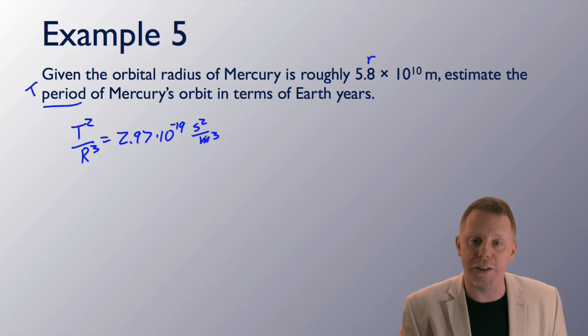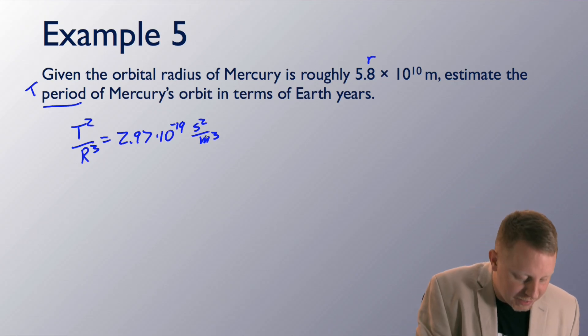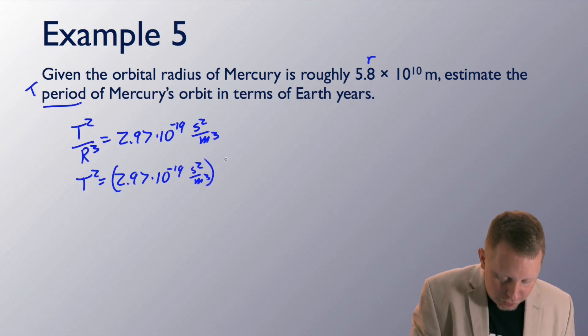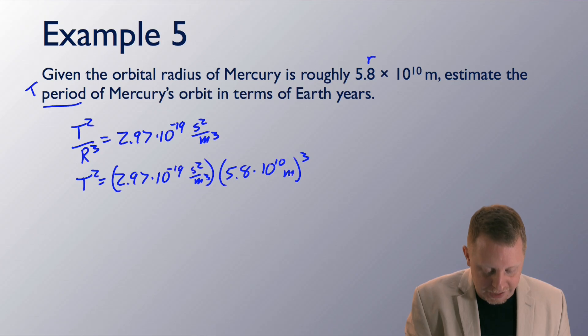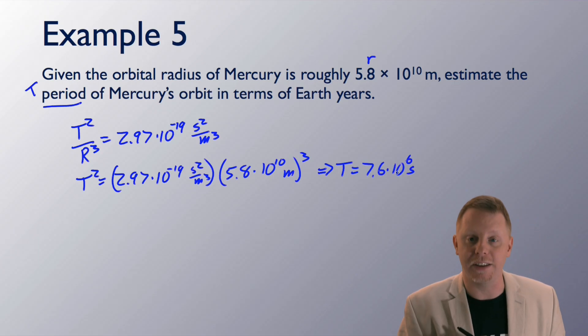Now we need to solve for the period of Mercury's orbit in seconds. So, the period then of Mercury is going to be this value times r cubed, or r cubed times all that, which is 2.97 times 10 to the minus 19 seconds squared per meter cubed, times r cubed, which it gives us as 5.8 times 10 to the 10 meters. Our meters cubed are going to cancel out. They'll make a ratio of 1, and that'll leave us T squared in terms of seconds squared. And when I solve that to get T by itself, I find that our period T is about 7.6 times 10 to the 6th seconds. 7.6 million seconds.